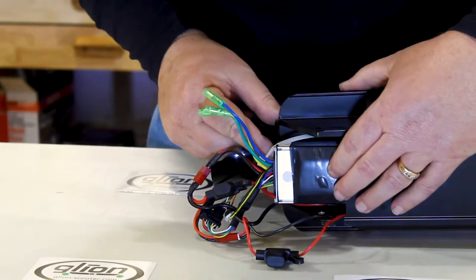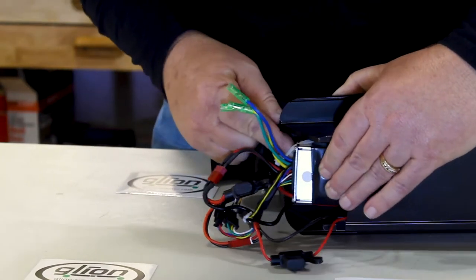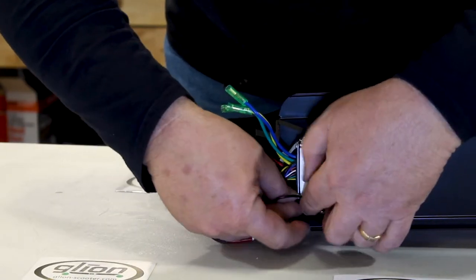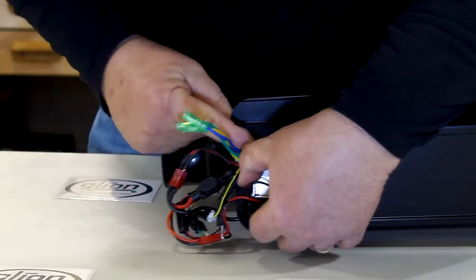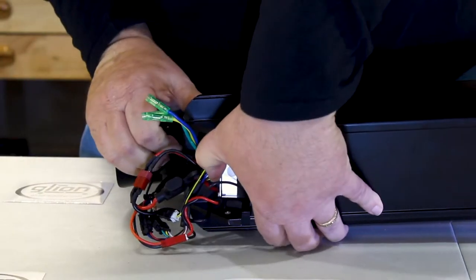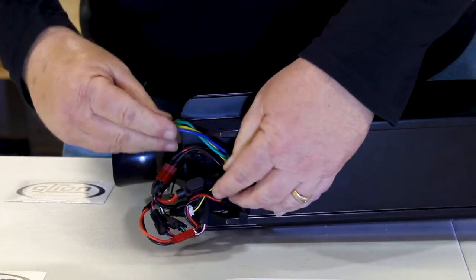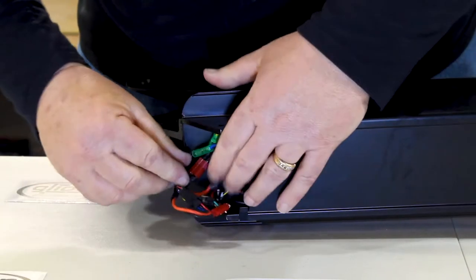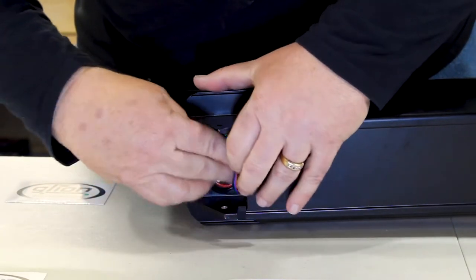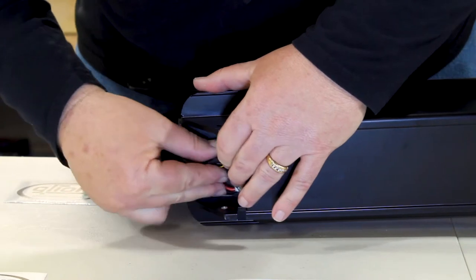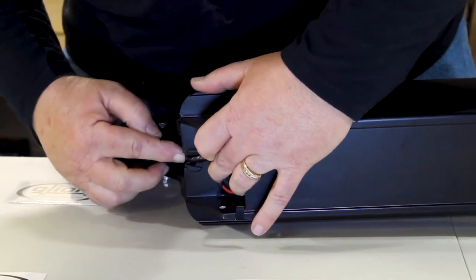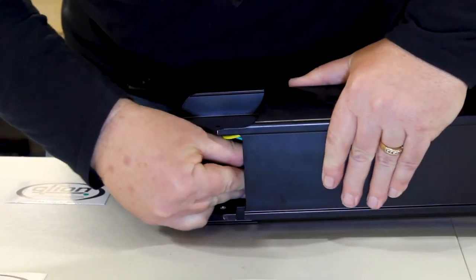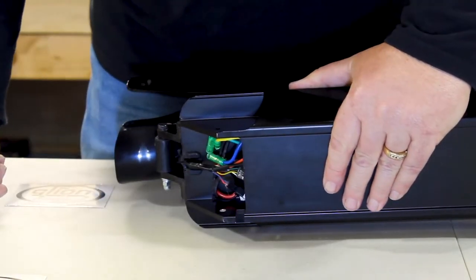Then what we'll do is get ready to assemble it. We'll start things in and just kind of gradually fit things in. Get all the wires in there. We want to make sure that we get our wiring harness back into its holder here. And we're ready to put the nose cone on.